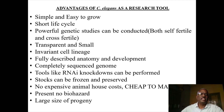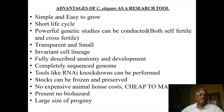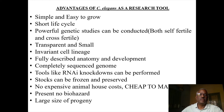The genome of C. elegans is completely sequenced, and RNA interference knockdowns can be performed. Stocks can be frozen and preserved. There is no expensive animal house cost, no need for IAEC approval, and it is very cheap to maintain. There is no biohazard at all — it is non-infective, non-pathogenic, and non-parasitic. A large size of progeny is also possible. These are all the advantages of C. elegans as an experimental animal model.